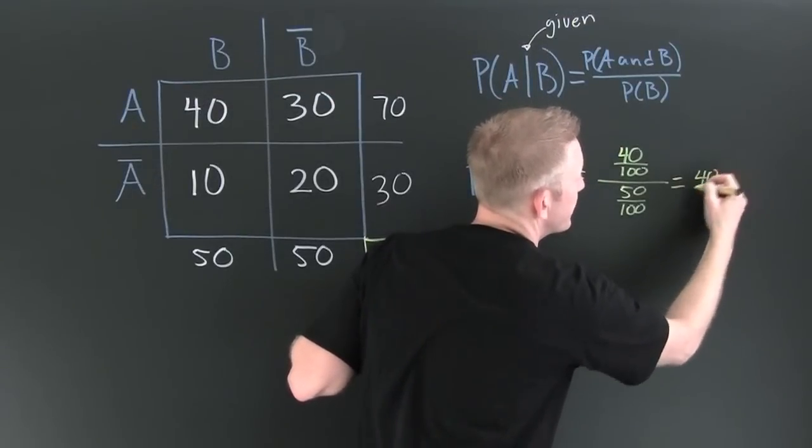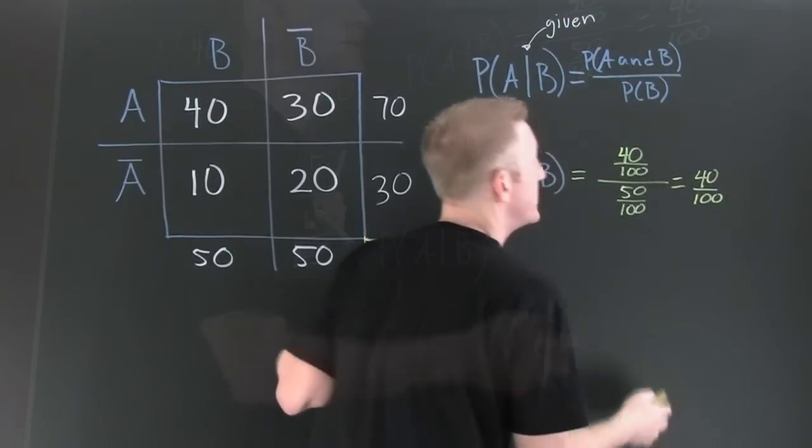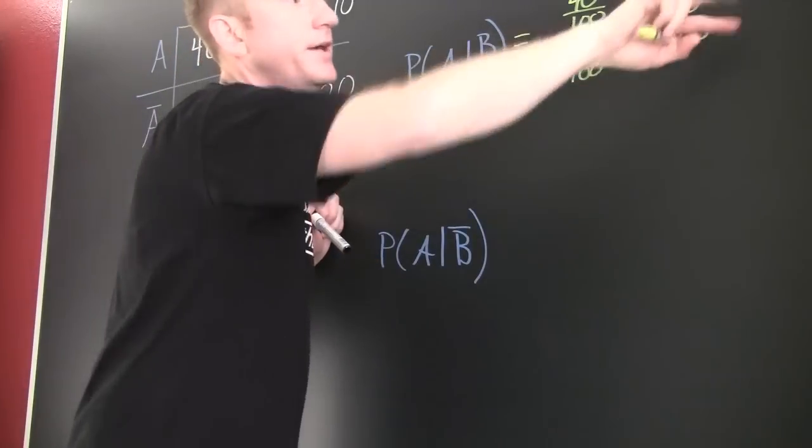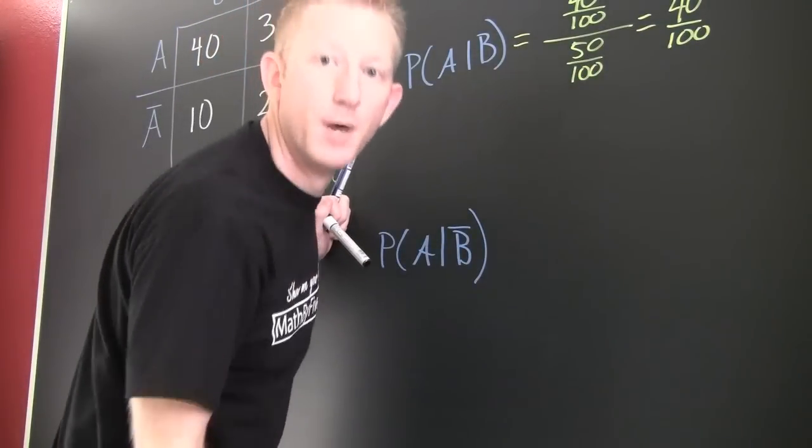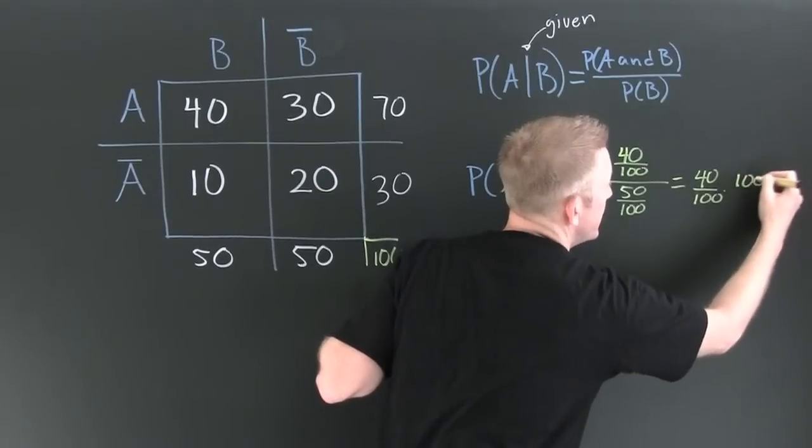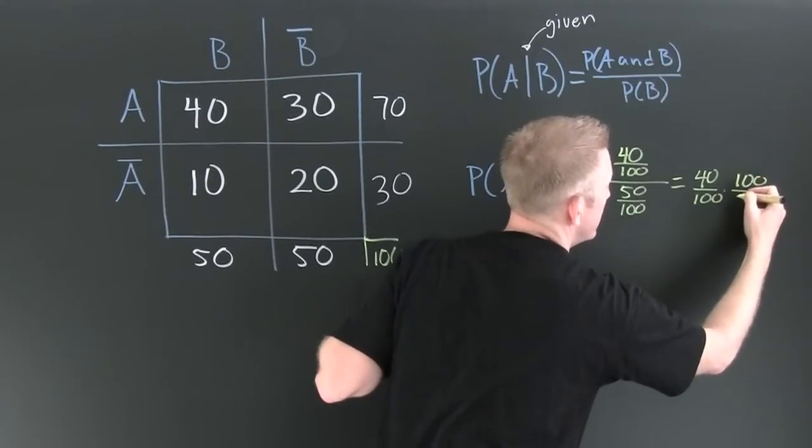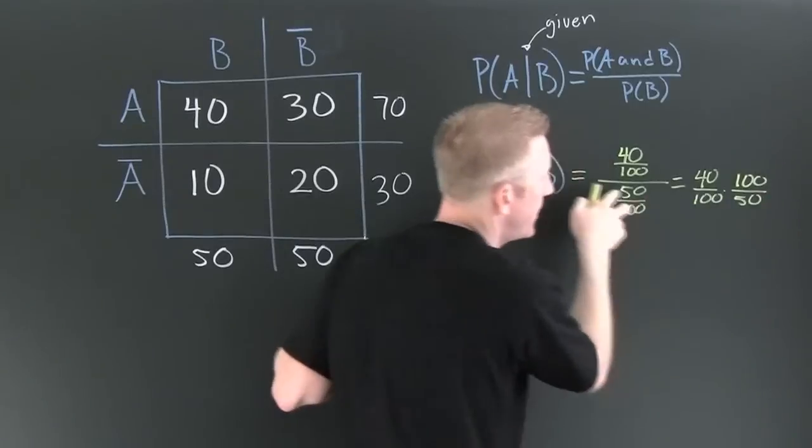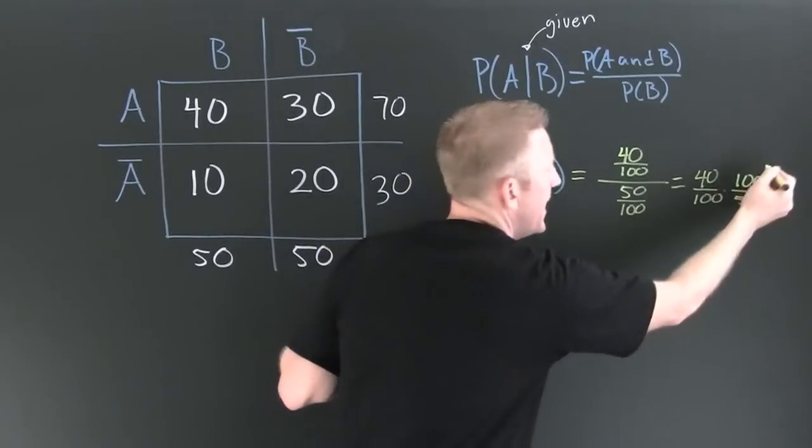This is going to be 40 100s. You gotta flip it before you multiply. Times 100 divided by 50. Because I flipped the one on bottom. And they fight.